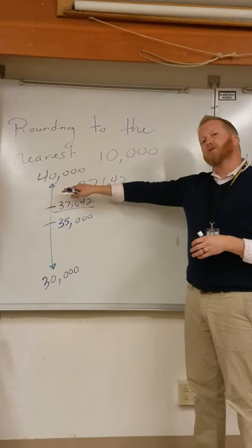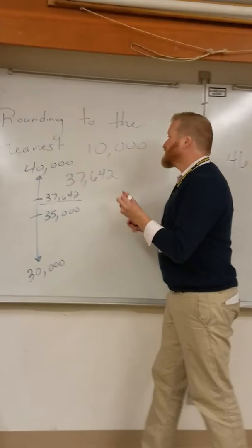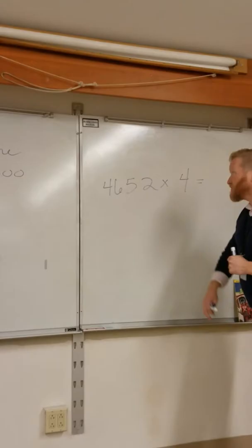However, this visual model really helps them kind of see, well, I'm rounding to the nearest 10,000. In this case, it is 40,000.